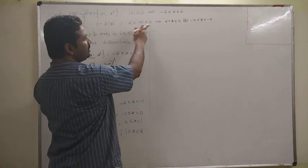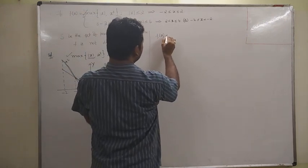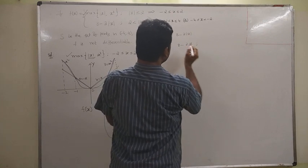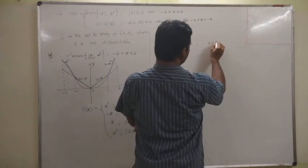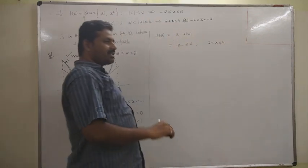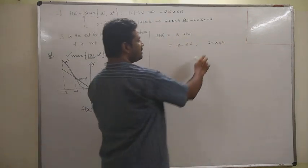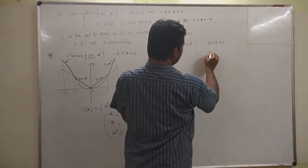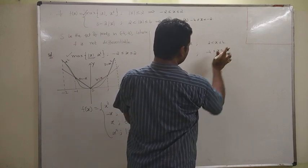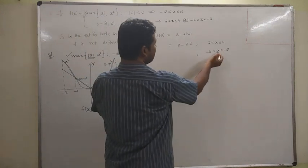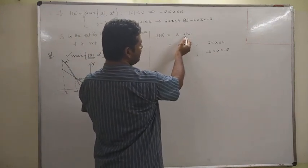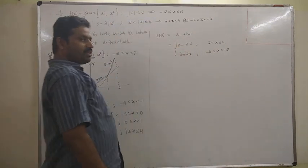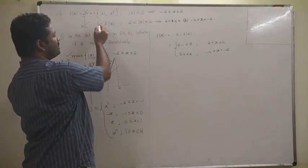The second part is 8 minus 2 mod x. For 2 less than x less than or equal to 4, mod x equals x, so this becomes 8 minus 2x. For minus 4 less than or equal to x less than minus 2, x is negative so mod x equals minus x, giving 8 plus 2x.